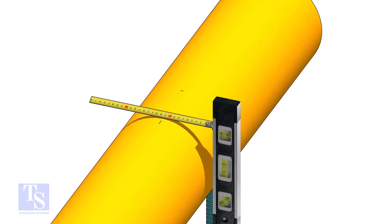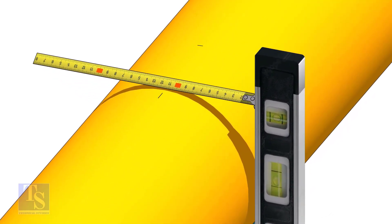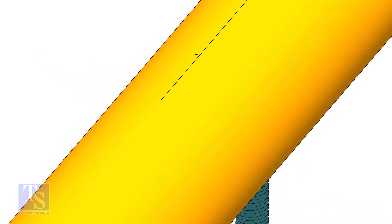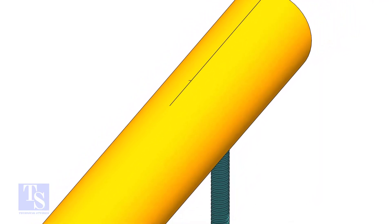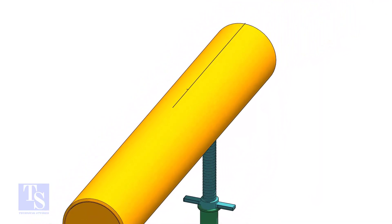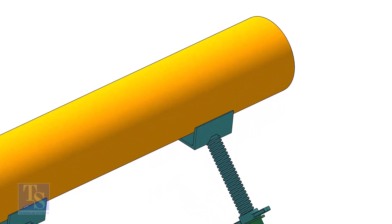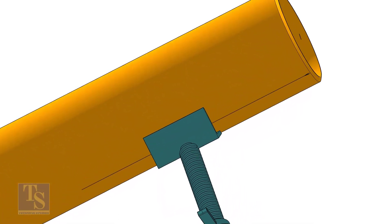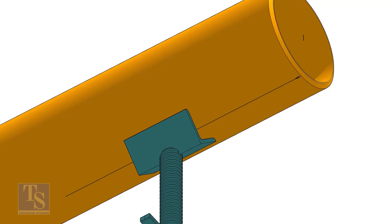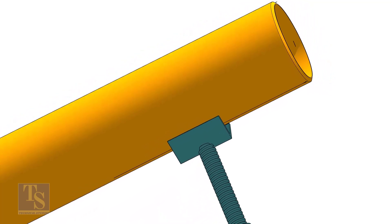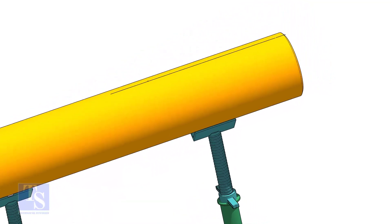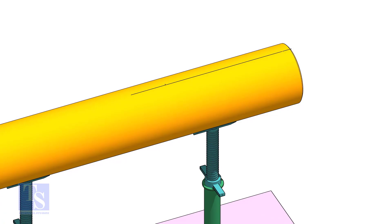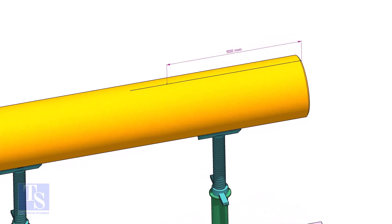Mark the center of the other end where you want the center line to be extended. Mark the center of the branch connection.